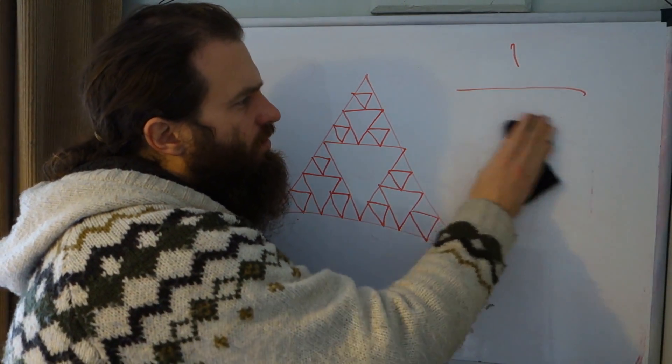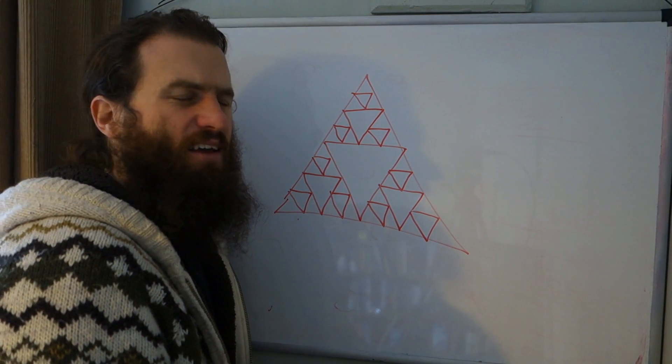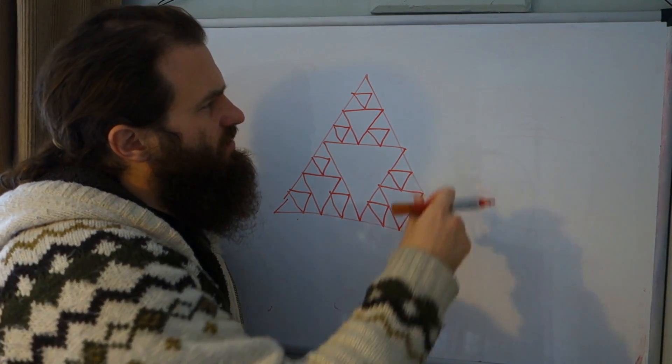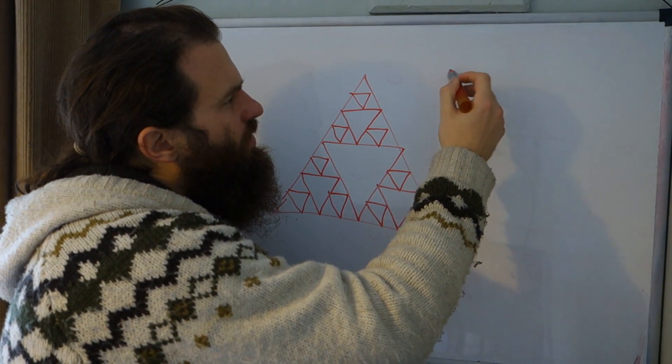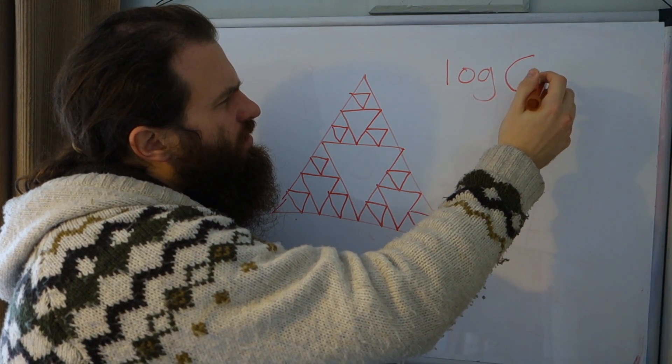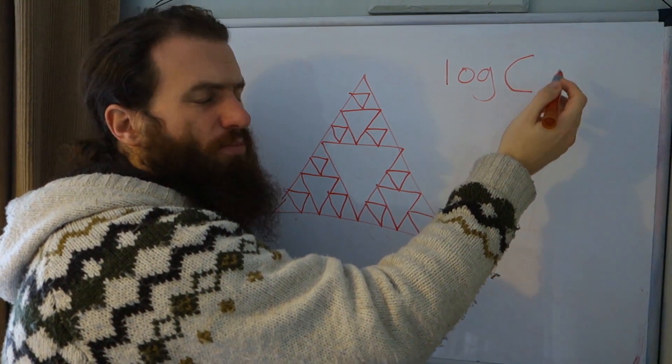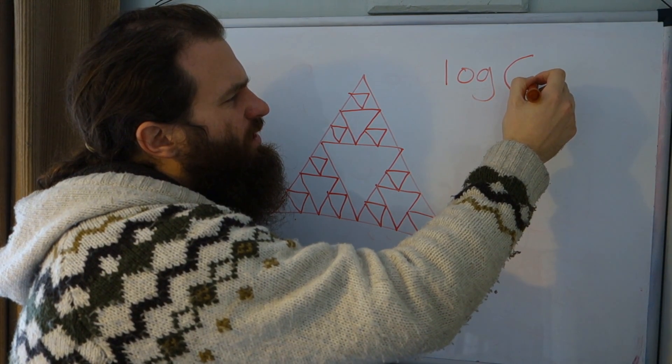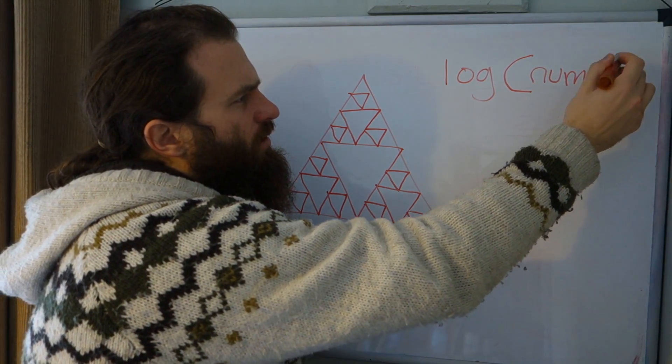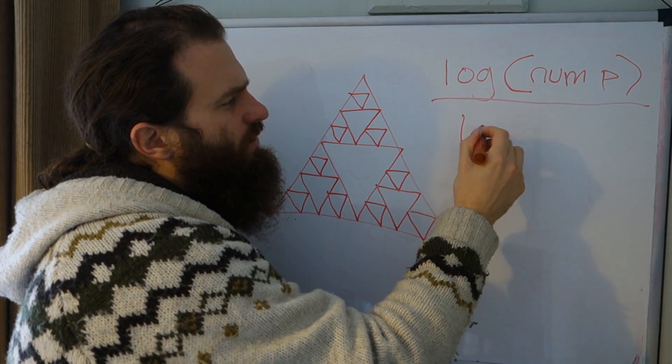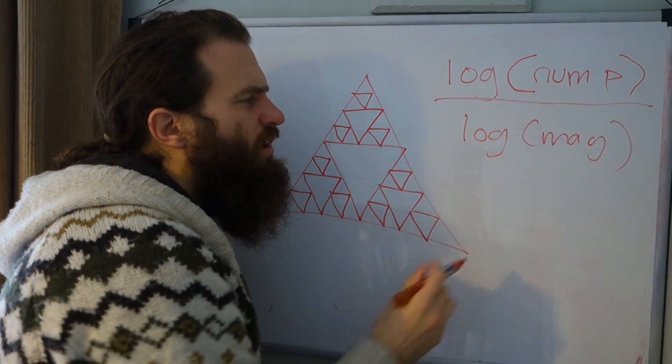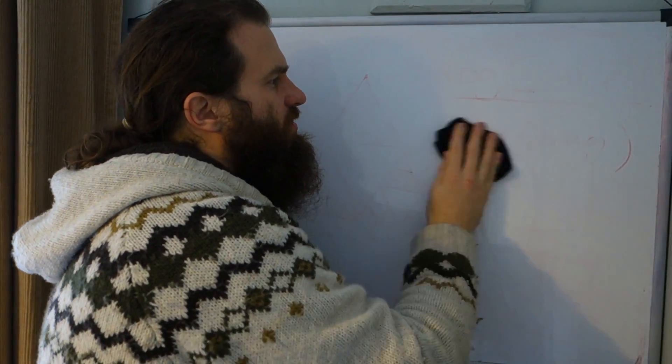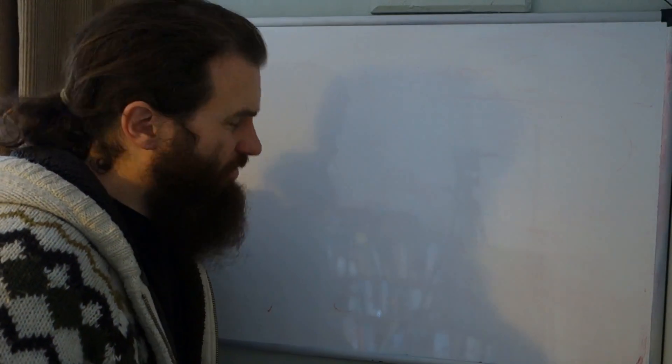And formally then, the fractal dimension is calculated as a ratio of two things. The first is the, so we take the log of what's called the, essentially the number of pieces that we're breaking the thing into. So we'll call that num p. When we divide that by what's called the magnification factor. And I really need to explain this and show some examples, otherwise it kind of doesn't make a lot of sense. And this is where the kind of self-similarity of a fractal comes in.